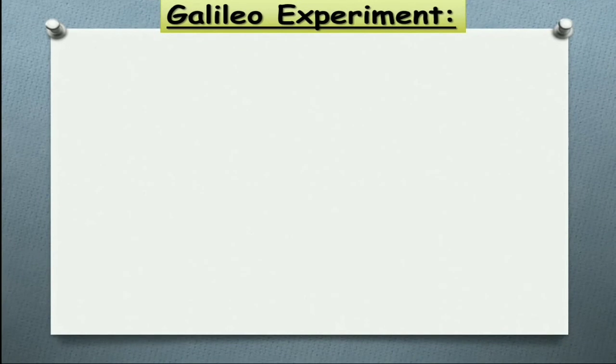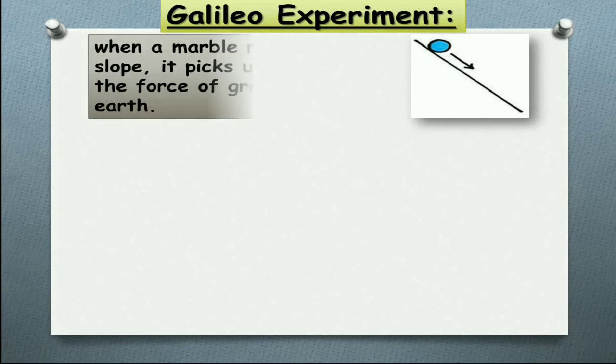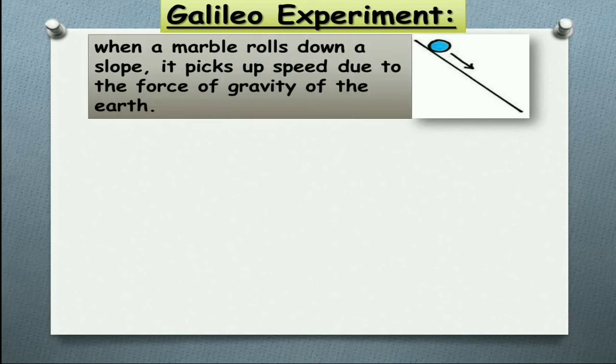Galileo conducted many simple experiments to explain the changes in motion. First, he took an inclined plane and rolled down the ball or marble. He found that when a marble rolls down a slope, its speed increases due to the force of gravity. So external force, gravitational force, is acting on it so the speed increases.